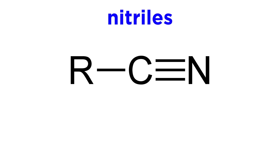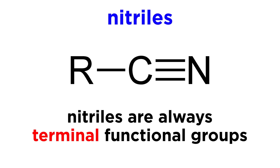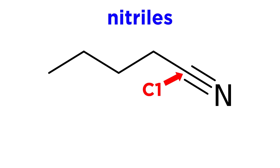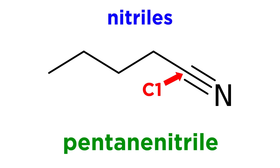Next we can look at nitriles. These involve a carbon atom and nitrogen atom with a triple bond between them. Because it requires three bonds from a carbon atom, these are always terminal functional groups, meaning at the end of a chain. So the parent chain will be the longest chain containing the nitrile carbon. Then we number so as to give the nitrile carbon occurring on carbon 1, and add -nitrile to the end of the molecule. So this would be pentanenitrile.